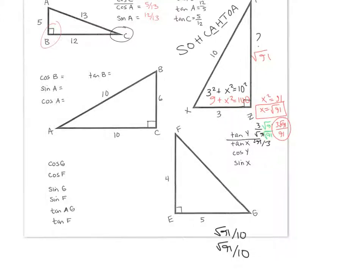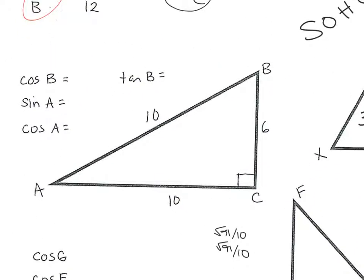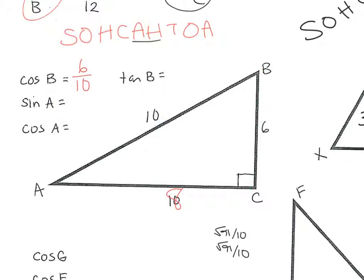This next triangle — I made a correction, that side should be an 8. Writing SOHCAHTOA again: cosine of B is adjacent divided by hypotenuse. Adjacent to B is 6 and the hypotenuse is 10, so it's 6 divided by 10, which reduces to 3 fifths — you always want to reduce. Tangent of B is opposite over adjacent: opposite of B is 8 and adjacent is 6, so that's 8 sixths, which reduces to 4 thirds.